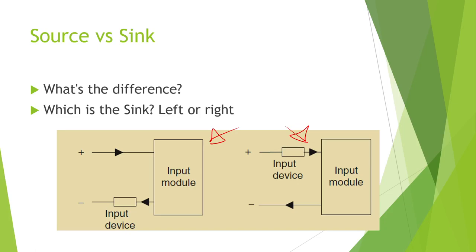The input device is on a different line. On the left side we have it on the negative, positive at the top. On the right side, the input's on the top — so it's on the positive. The question is: is the sensor sourcing or supplying voltage to the PLC, or is the sensor sinking, applying the ground connection to the PLC? When that sensor goes true, are we seeing 24 volts, or are we seeing ground?